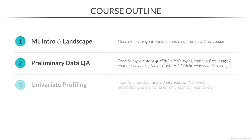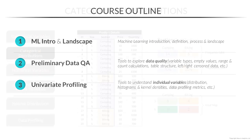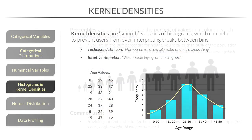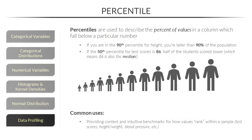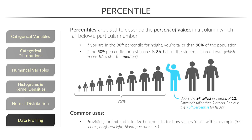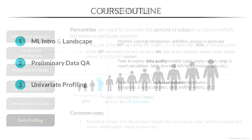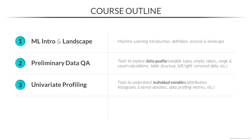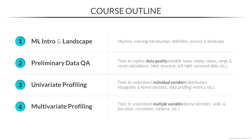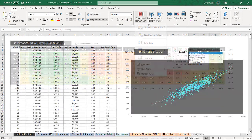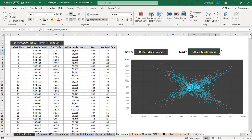Next, we'll dive into univariate analysis and use tools like frequency tables, histograms, kernel densities and profiling metrics to understand individual variables. Finally, we'll explore multivariate profiling tools, including heat maps, violin and box plots, scatter plots and correlation.